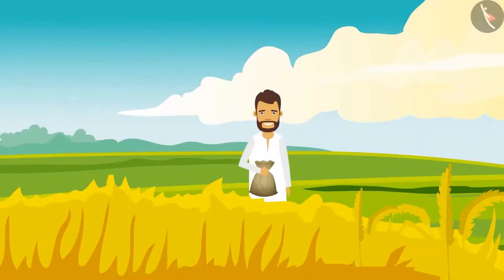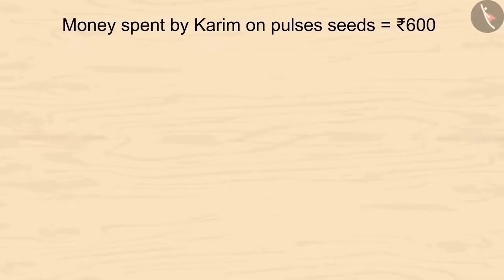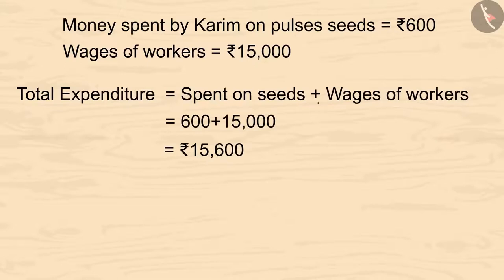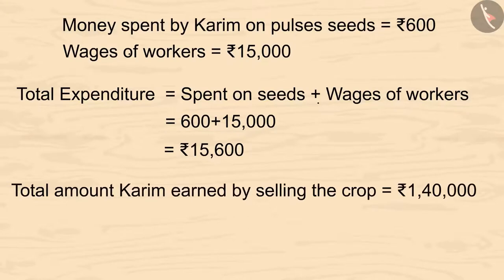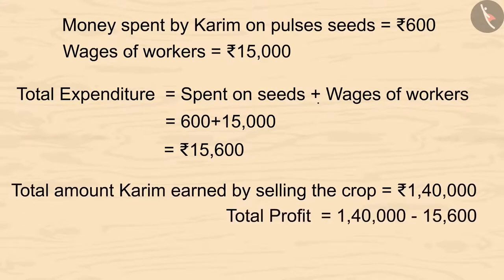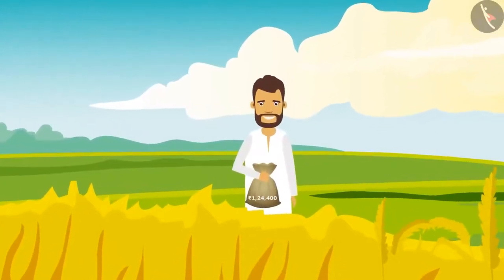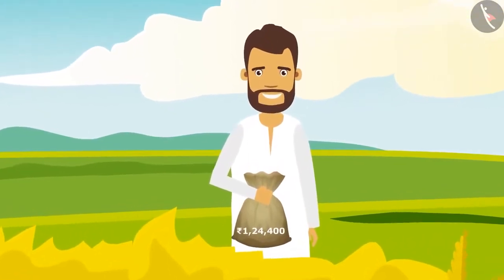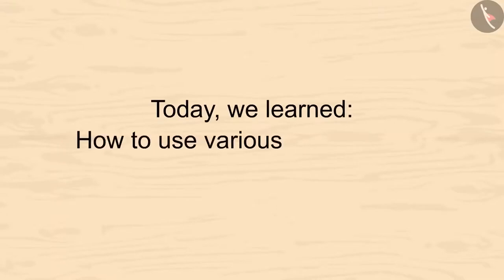Should we subtract or divide? Yes, we will divide. On dividing 1,40,000 by 70, we get 2,000. So Karim had sold 2,000 kilograms of pulses in these 3 months. Now let's see how much profit Karim has gained. He bought pulse seeds for 600 rupees and gave 15,000 rupees to the workers. On adding both amounts, we get 15,600 rupees. Karim got 1,40,000 rupees on selling the crop. If we subtract 15,600 from 1,40,000, we are left with 1,24,400 rupees. So Karim has made a profit of 1,24,400 rupees.